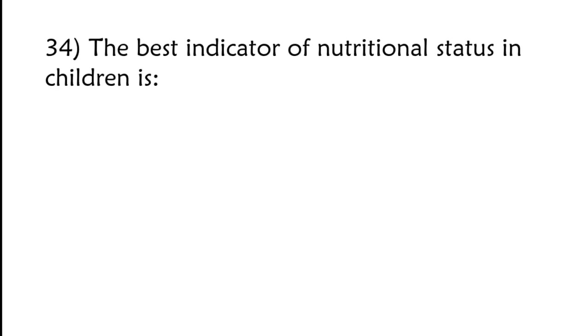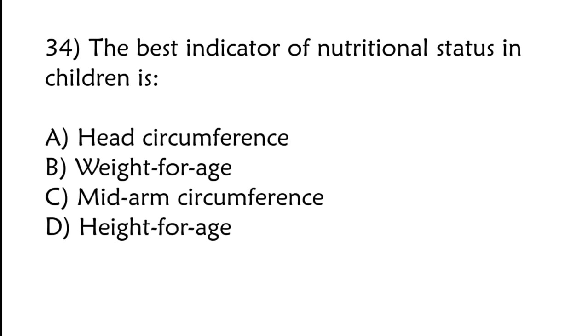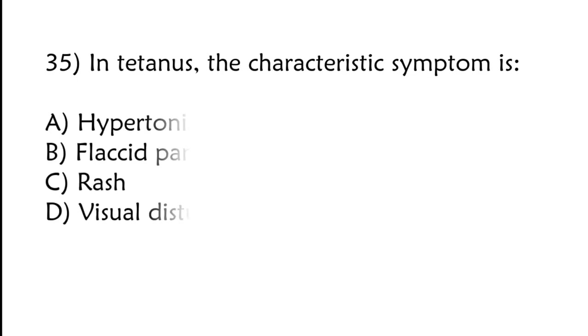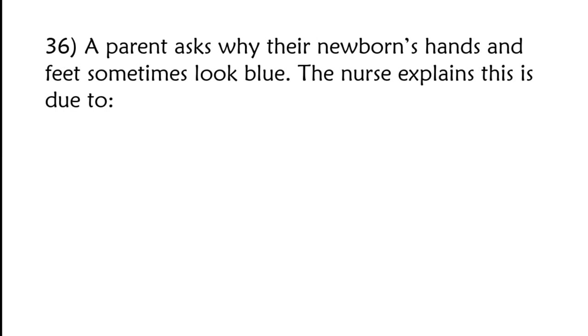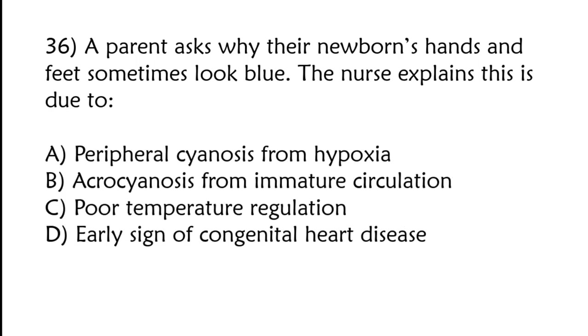The best indicator of nutritional status in children is head circumference, weight for age, mid-arm circumference, height for age. Correct answer is option B, weight for age. In tetanus, the characteristic symptom is hypertonia and locked jaw, flaccid paralysis, rash, visual disturbances. Correct answer is option A, hypertonia and locked jaw. A parent asks why their newborn's hands and feet sometimes look blue. The nurse explains this is due to acrocyanosis.